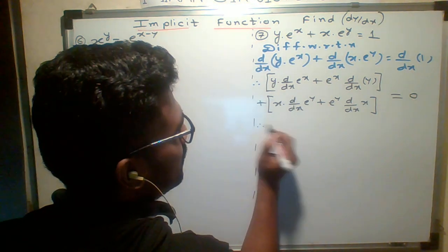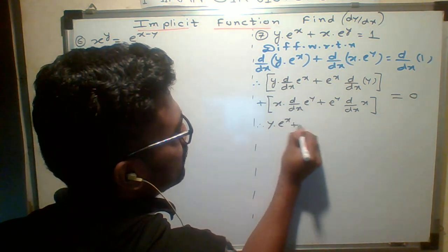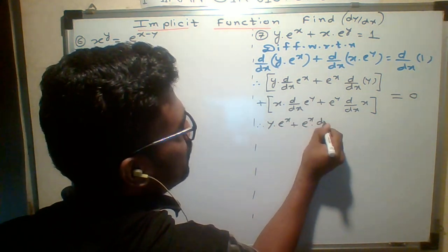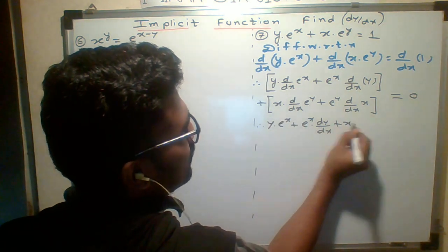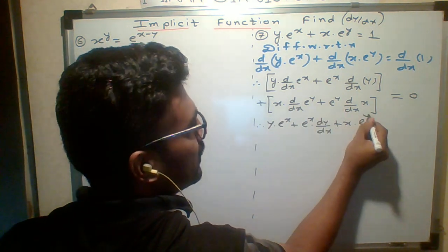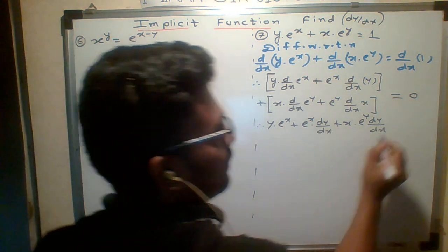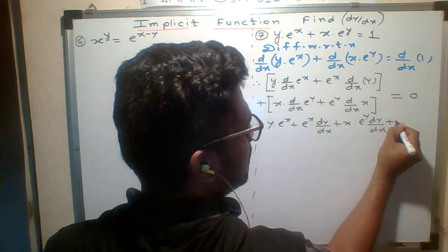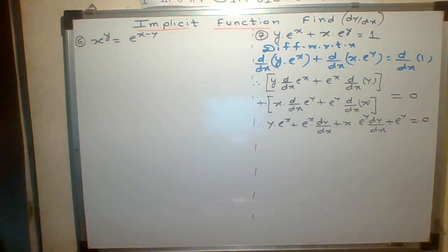Let me simplify the numerator first. What is derivative e^x? e^x. Here is e^x dy/dx, plus x. Now what is derivative e^y? e^y again dy/dx. Don't forget to do it. Plus e^y. What is derivative of x with respect to x? One. This is your final answer.